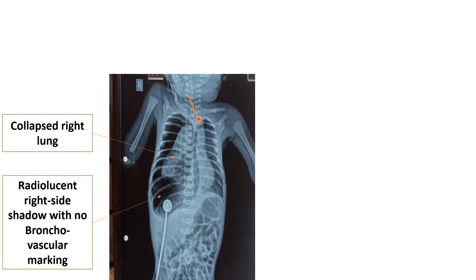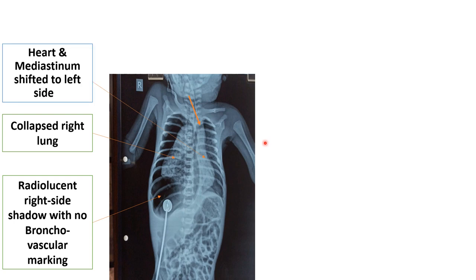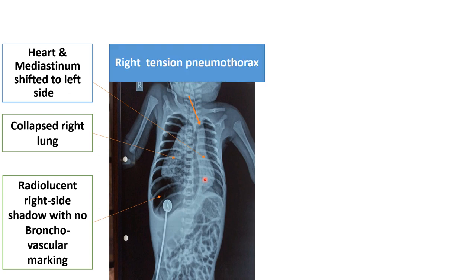You can see the trachea is shifted to the left side. Whenever there is a pleural disease — pleural effusion or pneumothorax — the patient will have shifting of the trachea toward the opposite side. Whenever there is a shift of the mediastinum and heart to the opposite side, we label it as tension pneumothorax. If the patient has a radiolucent shadow without bronchovascular marking but without mediastinal shift, we simply label it as pneumothorax.